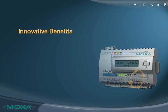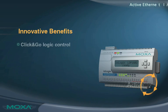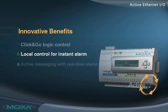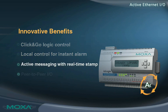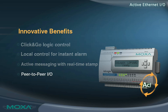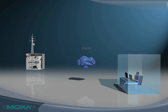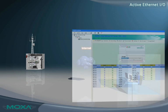The control logic on Active Ethernet I.O. servers is like an intelligent computer, providing features that cannot be matched by traditional Ethernet I.O. solutions. The core engine of Active Ethernet I.O. is Click and Go logic control.